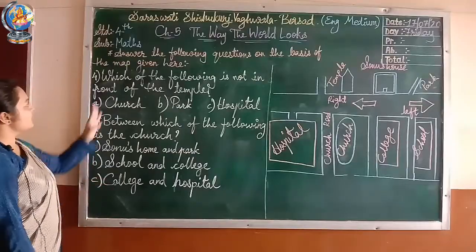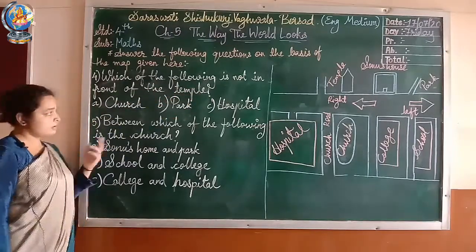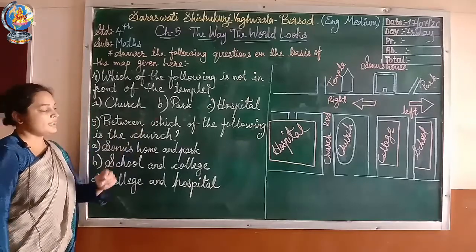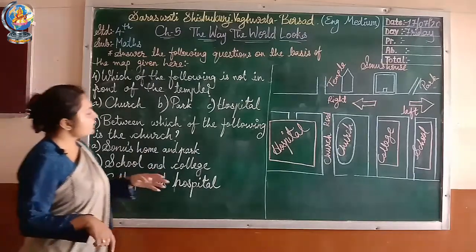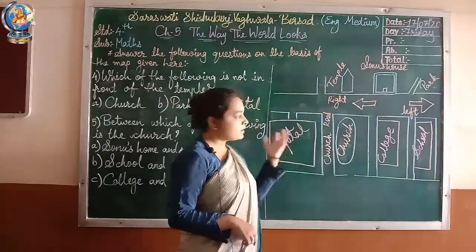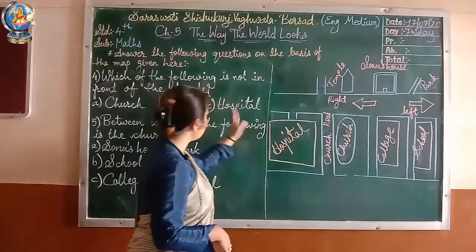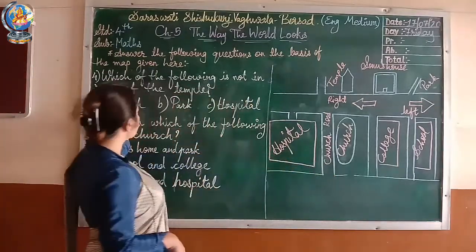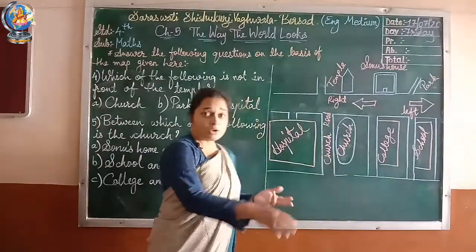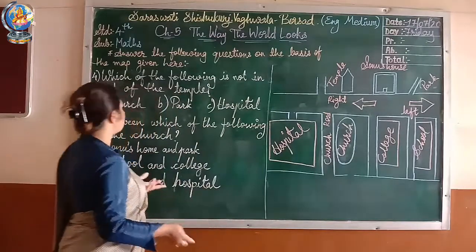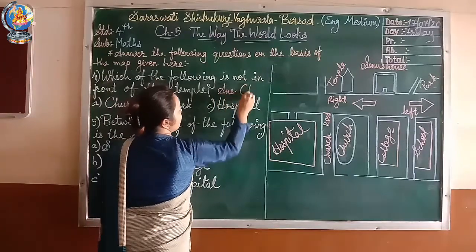The fourth question is: which of the following is not in front of the temple? Options are A. Church, B. Park, C. Hospital. Hospital is there in front, church is also there, but park is beside the temple — not in front of it. So the answer is option B.